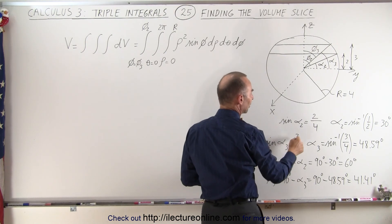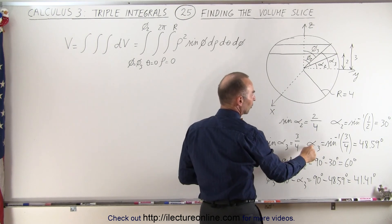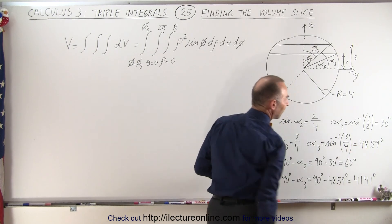And sine of alpha 3 is equal to 3 over 4, 4 again being the hypotenuse, opposite side over the hypotenuse. So the angle is equal to 48.59 degrees.